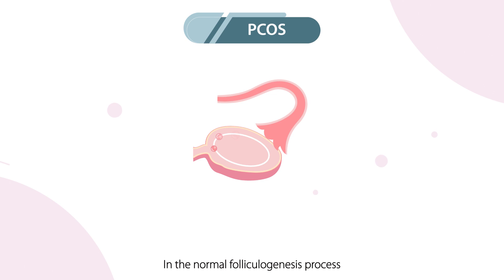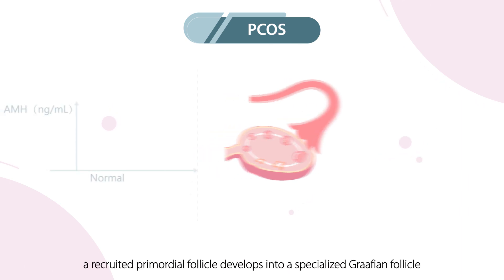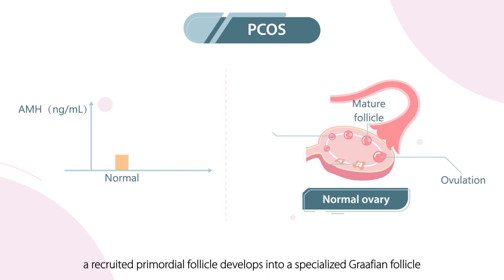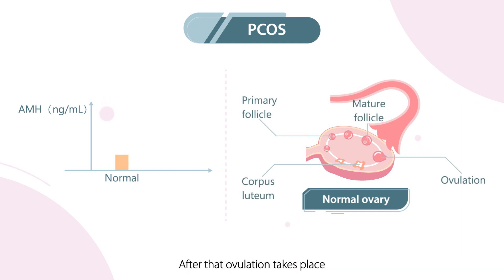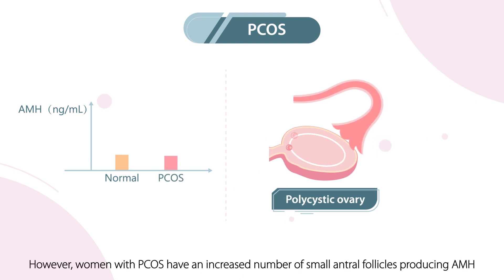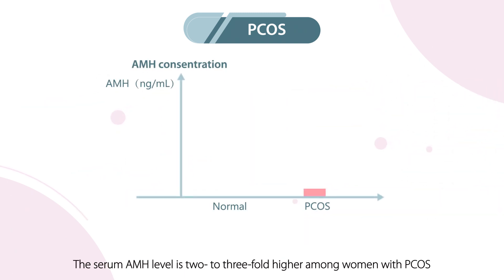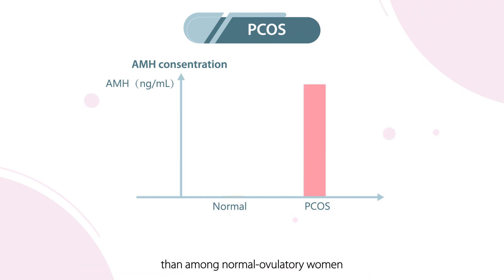In the normal folliculogenesis process, a recruited primordial follicle develops into a specialized graafian follicle, after which ovulation takes place. However, women with PCOS have an increased number of small antral follicles producing AMH. The serum AMH level is two to three-fold higher among women with PCOS than among normal ovulatory women.